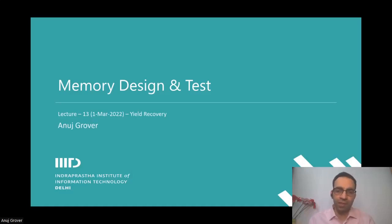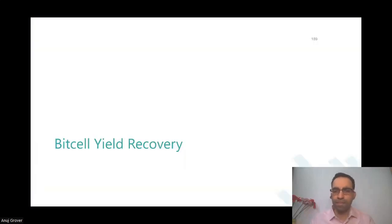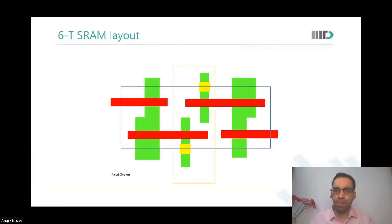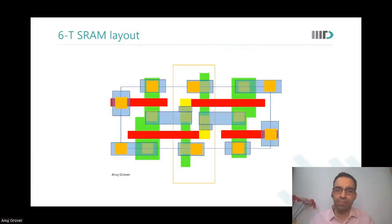And yield recovery from physical defects. So what do you mean by physical defects? So remember this, what is this? Hello, what is this? Layout of the 6T SRAM cell. Layout of the 6T SRAM cell.